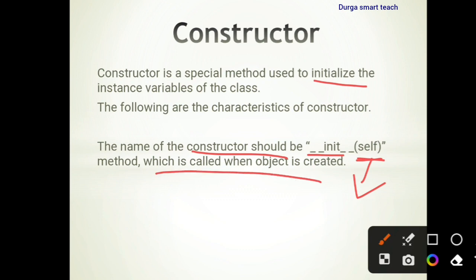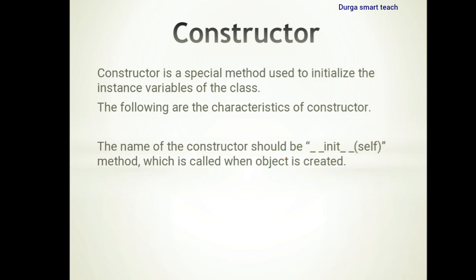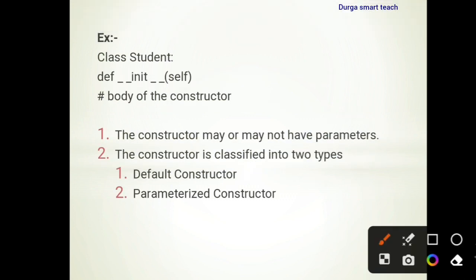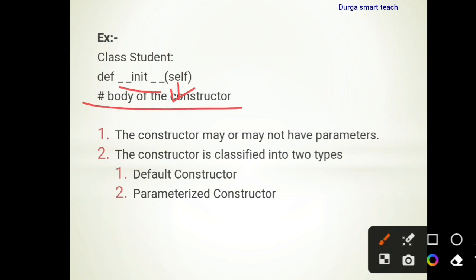Whenever the object is created, this method is called and it is used to initialize the values. For example, class Student — Student is a class name. Inside this class it contains one method, which is the constructor. The constructor name must be __init__ and it must contain the parameter 'self'. Inside it contains the body of the constructor.